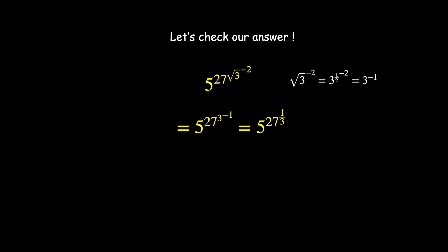Finally 27 to the 1 third is the cube root of 27 which is 3. And 5 cubed is equal to 125. So that checks out.